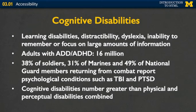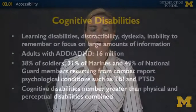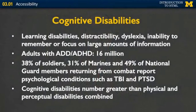Another issue is cognitive disabilities. When we talk about cognitive disabilities, there's a very wide range of issues we might be talking about: learning disabilities, distractibility, dyslexia, even the ability to remember or focus on large amounts of information. There are 16 million adults with ADD or ADHD. Another overlooked population is the large number of soldiers, Marines, and National Guard members who have different psychological conditions such as traumatic brain injury or post-traumatic stress disorder. We want to make sure that things are easy to understand, not flashing, and not requiring great amounts of concentration. Cognitive disabilities number greater than physical and perceptual disabilities combined.